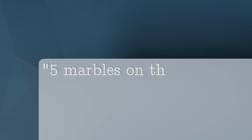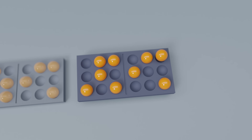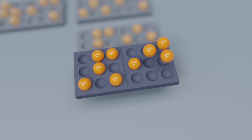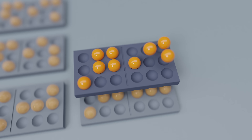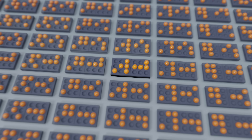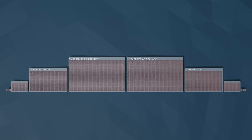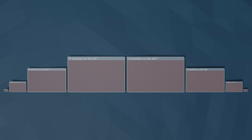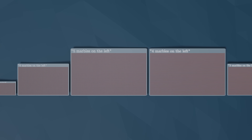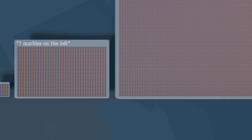For example, five marbles on the left defines a macrostate. It's an abstract definition that does not exactly specify the position of each marble. And there are a lot of marble arrangements that fit this macrostate definition. We call these underlying, precisely defined arrangements microstates. Here you can see all the possibilities of how we can arrange nine marbles on this grid, ordered by how many of them are on the left side.